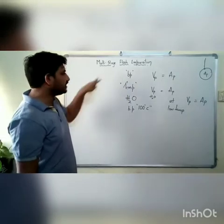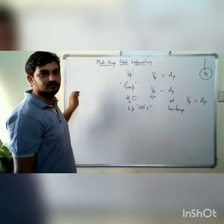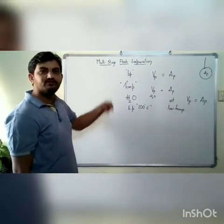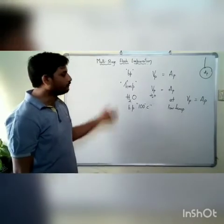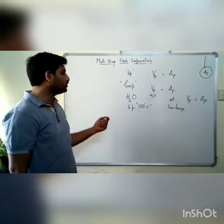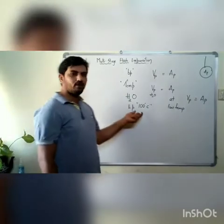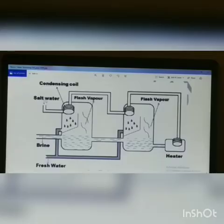In the multi-stage flash evaporation technique, we pass the steam or brine through multiple evaporation units wherein there is a continuous decrease in atmospheric pressure, which accounts for the fast evaporation of water. We thus obtain fresh water out of brine. We will observe this phenomenon using the diagram.